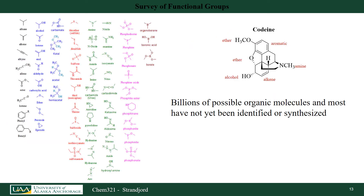Here is another organic molecule — codeine — that contains multiple functional groups. This single molecule contains an ether, an aromatic ring, another ether, an amine, an alkene, and an alcohol. In fact there are billions and billions of possibilities of organic molecules, and most of them have not been identified or synthesized. So there is a lot of opportunity for organic chemists to make new drugs, new polymers, and new types of materials for our society.